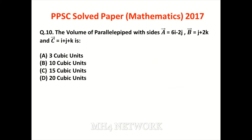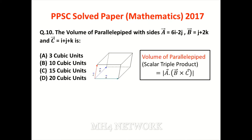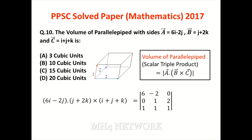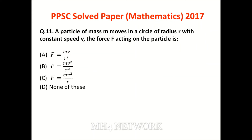The volume of a parallelepiped with sides A, B, C — teen dimension mein yeh hota hai. Agar teeno sides vectors se represent hon toh scalar triple product ka absolute value volume of parallelepiped banta hai. Scalar triple product determinant se calculate karte hain — simplify karein toh 10 cubic units answer aa jaata hai. Option B is the correct answer.